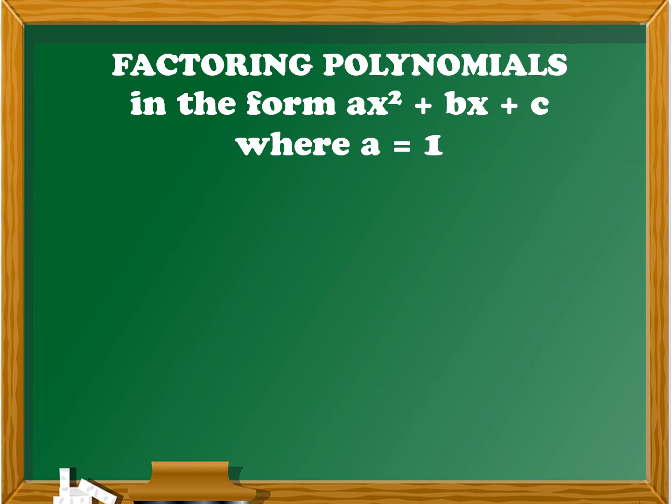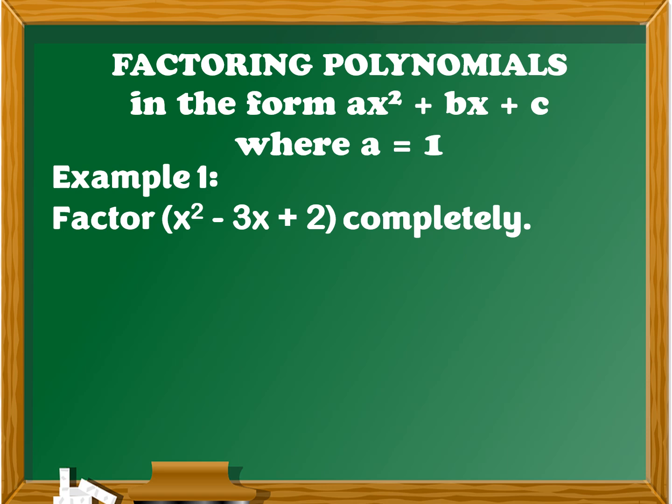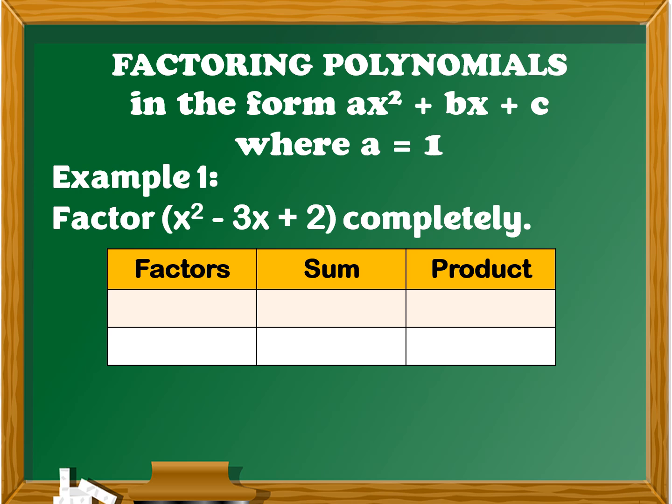Factoring polynomials in the form of ax squared plus bx plus c where a is equal to 1. For example, number 1: factor x squared minus 3x plus 2 completely. So let's have a table. In the first column we have the factors — we're going to determine the factors of the constant term. The constant term here is 2, so the factors of 2 are: 1 and 2, and also negative 1 and negative 2.